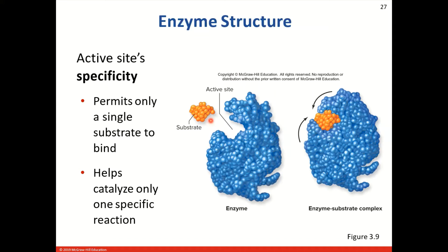The active site is going to have a lot of specificity — it's very specific with what it actually allows in, permitting only a single specific substrate to bind. As the substrate comes in, we have a little bit of a shape change around the active site. When the substrate binds, we now have the enzyme-substrate complex, which helps catalyze only one specific reaction. Most enzymes end in the suffix -ASE, and as we see that, the reactions they catalyze are very specific reactions.